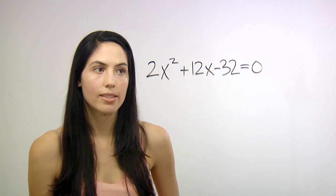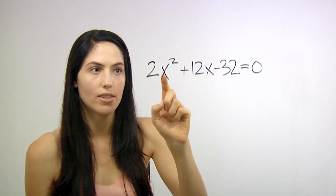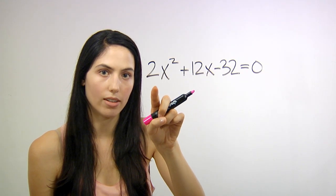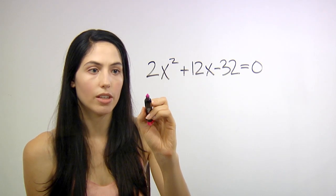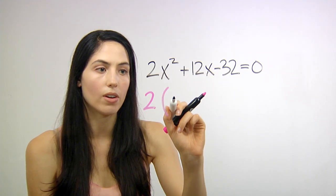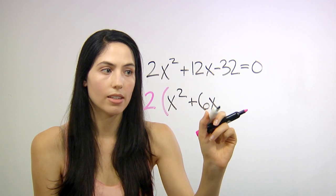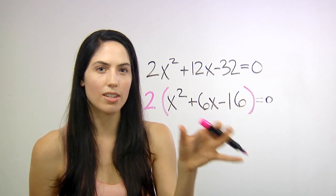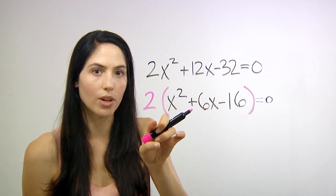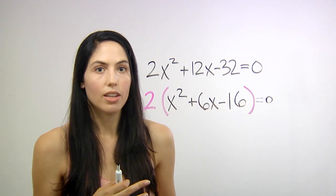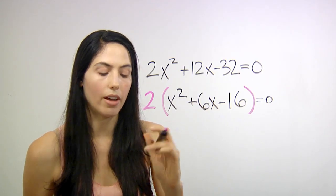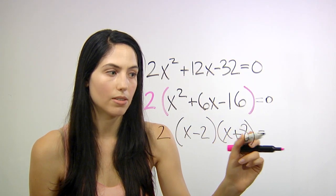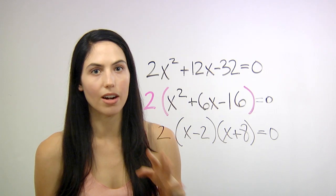Say you have a tougher example where your quadratic equation starts with 2x squared instead of just x squared. The first thing to do is check if you can factor out a number overall. In this problem we can pull out a 2 from every term, giving us 2 times the quantity x squared plus 6x minus 16 equals 0. Notice this problem was actually just like the last one but hidden — disguised by an overall constant of 2 — so it factors using the same brute force method.